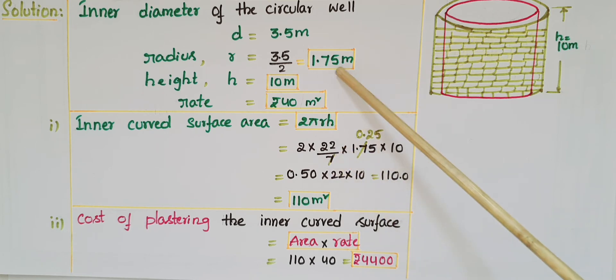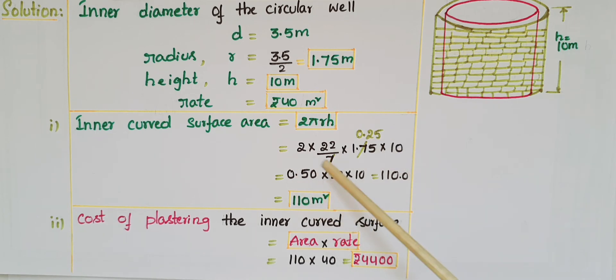Multiply 2 × 0.25 = 0.5 × 22 × 10 = 110. So inner curved surface area is 110 meters square.